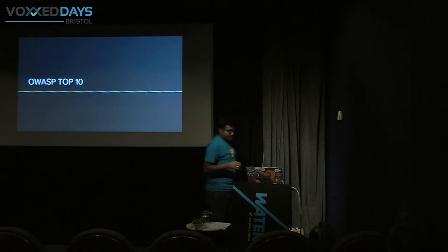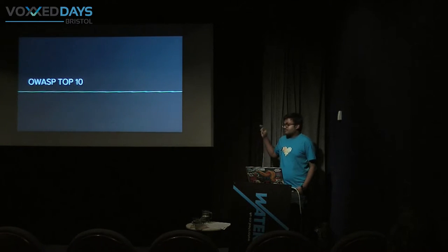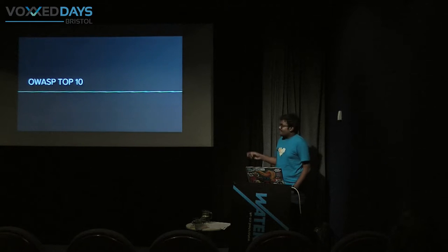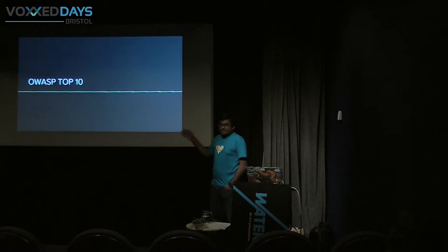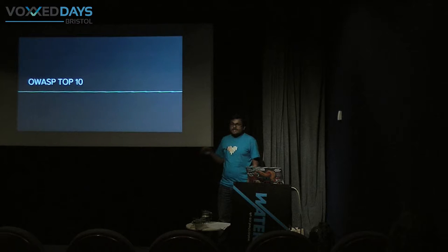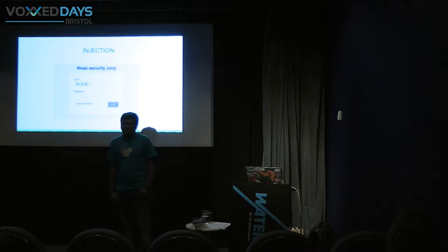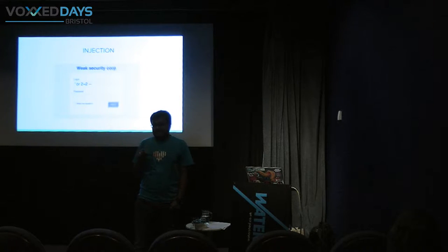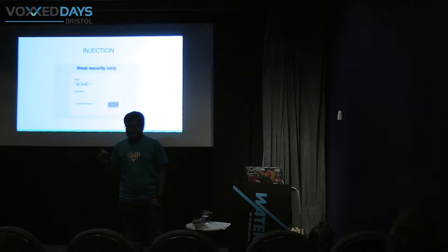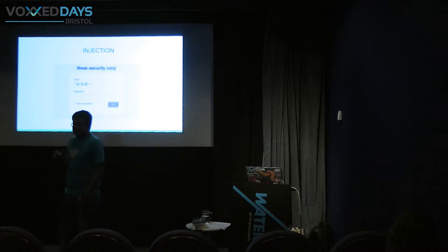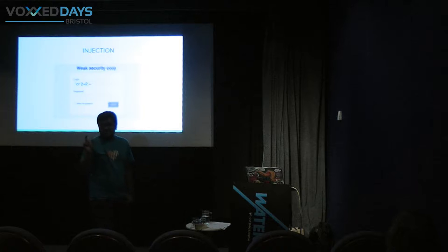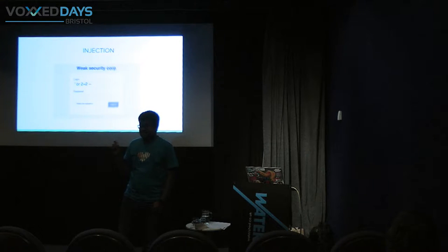Today I'm going to speak about the vulnerabilities posing a threat for web applications. Those top 10 vulnerabilities are from OWASP. They have listed them out, and the first vulnerability among that would be the injection flaw. This flaw occurs when untrusted data has been sent to the interpreter as part of a code or a command. Throughout this talk, I will be using the term 'untrusted data' frequently.